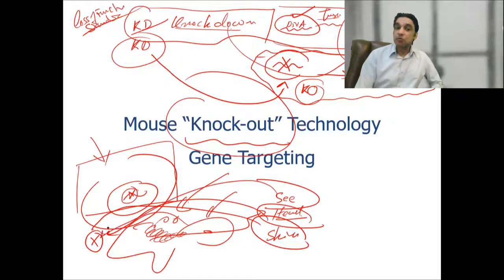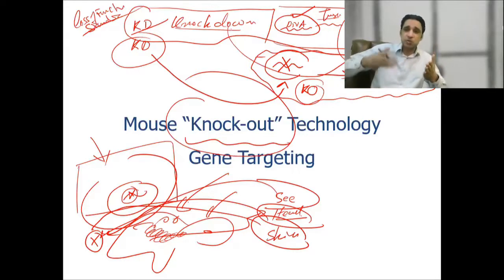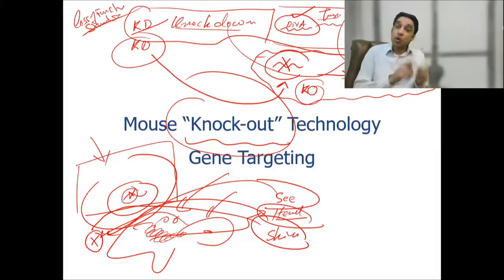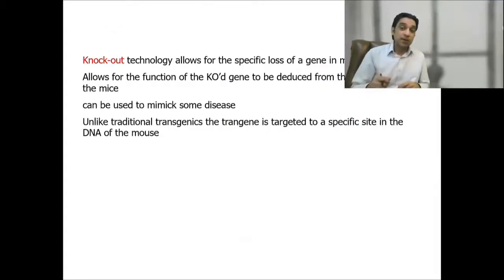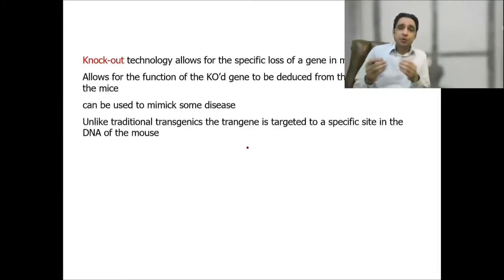That is how we originally accumulated our knowledge and understanding about gene functions. When you Google a gene and go to portals like NCBI, Gene Cards, or Expasy, all the information accumulated there was generated with the help of this technology. A knockout mouse helped us study what functions a particular gene is related to, and scientists then developed one-to-one correspondence between genes and functions.